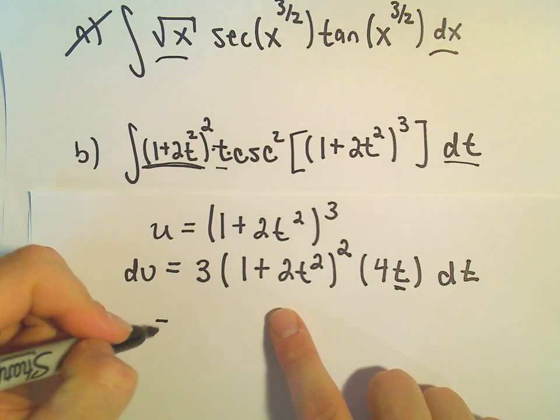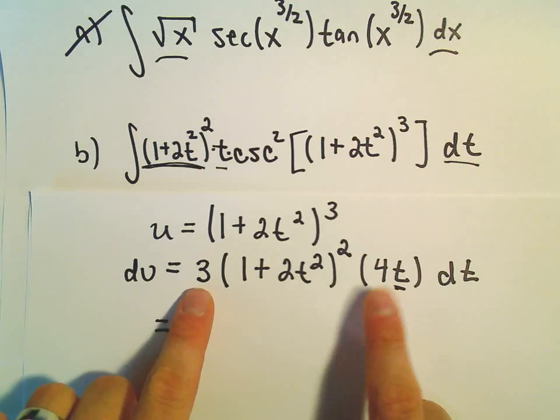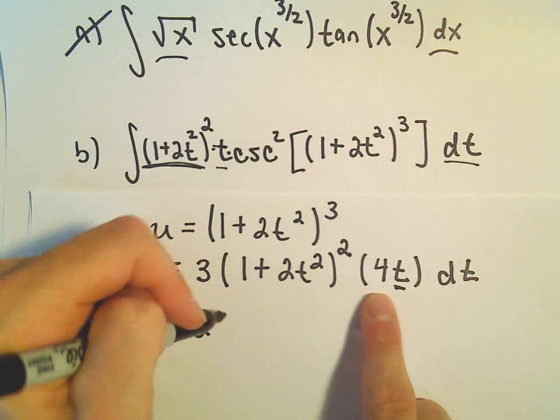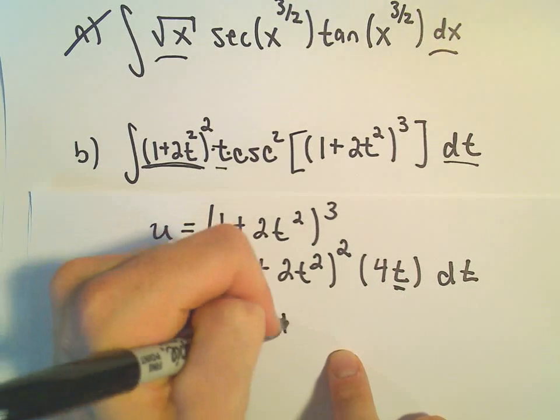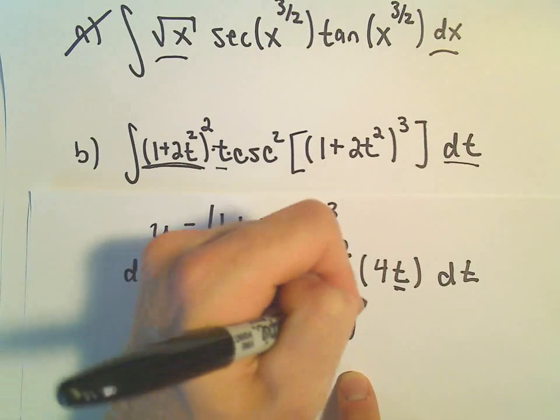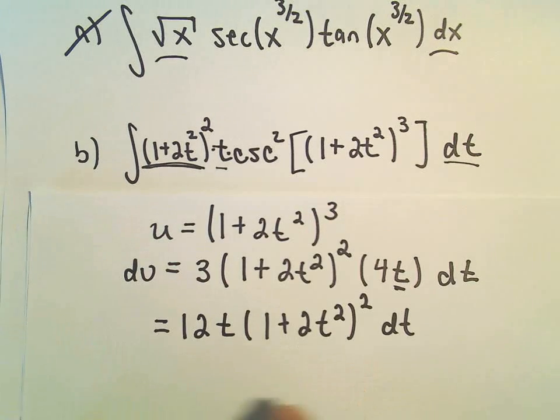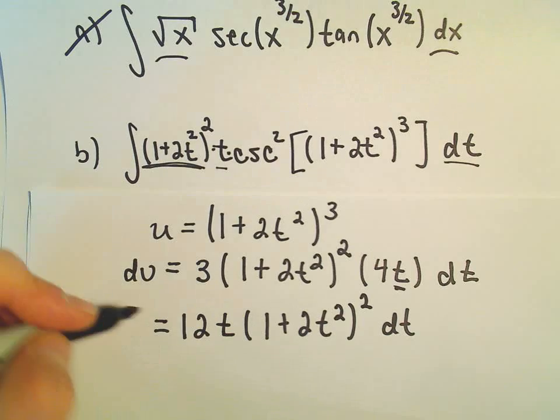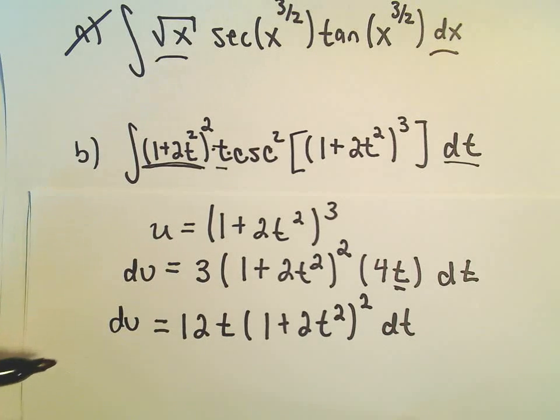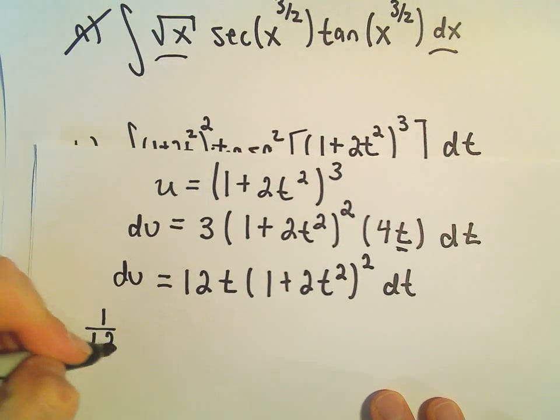The only thing that we don't want is if we multiply, we would have 3 times 4, it looks like we would get 12t(1 + 2t²)² dt. And there's no 12 in here, so I'm going to get rid of the 12 just by multiplying both sides by 1 over 12.